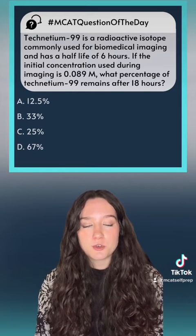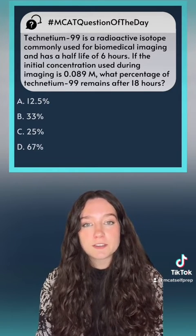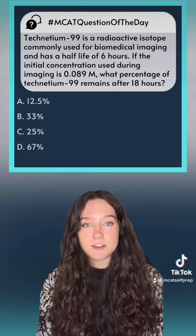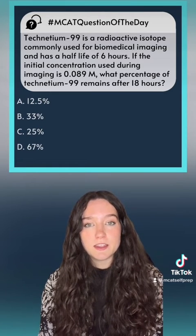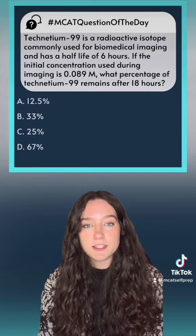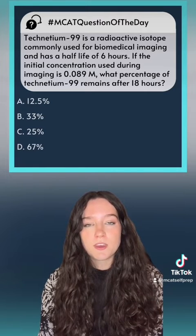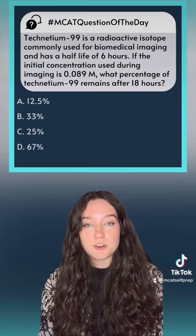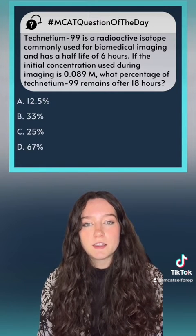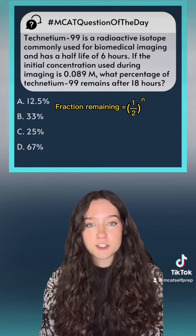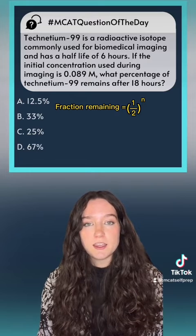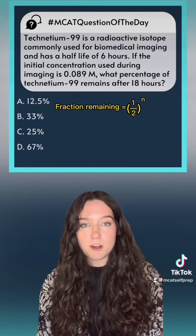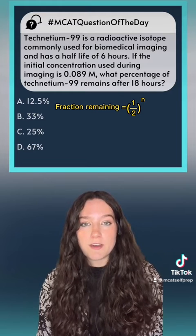Radioactive decay is a first-order process. For first-order processes, the half-life is constant throughout the entire decay. This means that the half-life of technetium-99 is constant. In order to figure out the fraction remaining after a certain number of half-lives, the equation is: fraction remaining equals one-half raised to the n power, where n is the number of half-lives.